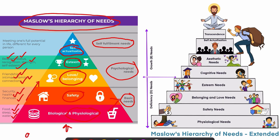Usually, as age increases, people move upwards in this pyramid, and also as they become rich and all the basic needs are ensured, they climb above so they can focus on the needs towards self-actualization.